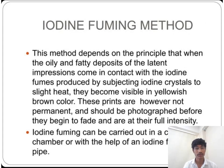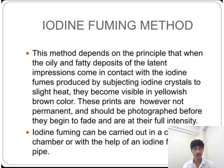The iodine fuming method depends on the principle that when the oily and fatty deposits of the latent impression come in contact with iodine fumes produced by subjecting iodine crystals to slight heat, they become visible in a yellowish-brown color. These prints are not permanent and should be photographed before they begin to fade, while they are at their full intensity. Iodine fuming can be carried out in a closed chamber or with the help of an iodine fuming pipe.